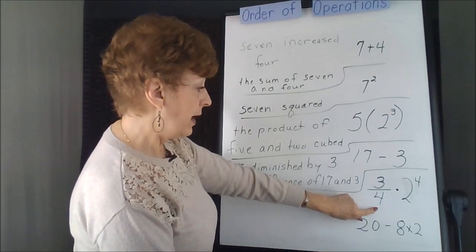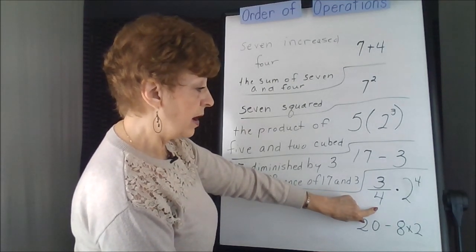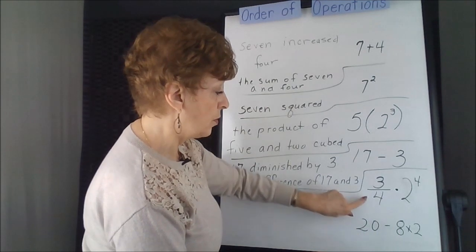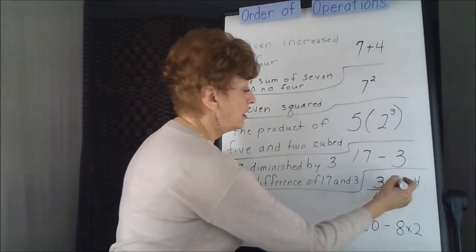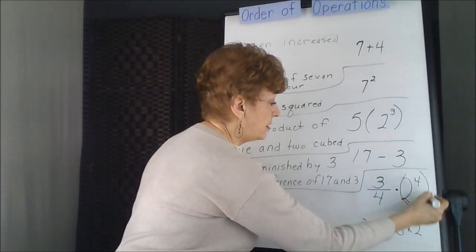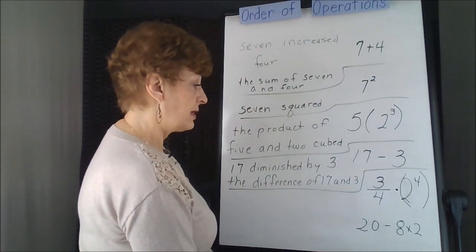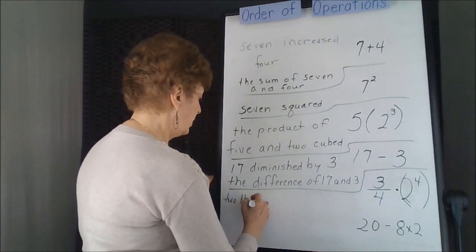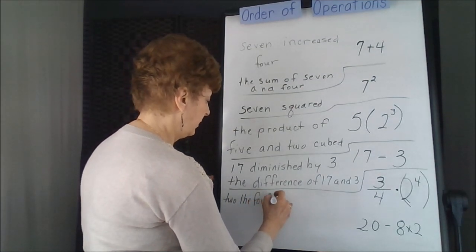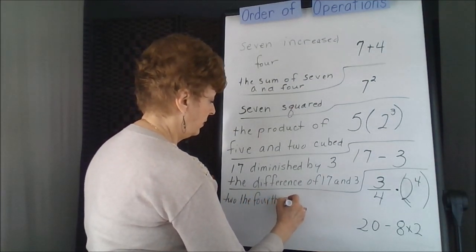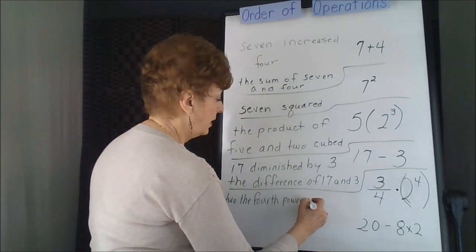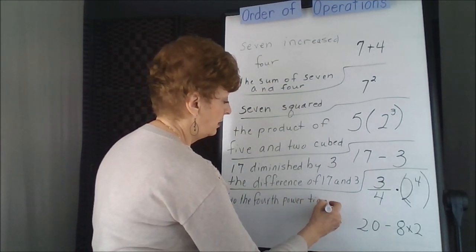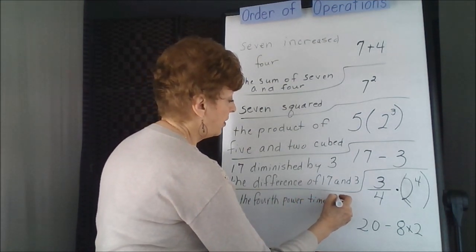Here we have an order of operations where exponents would come before the fraction. So this part right here would be done first. You could say 2 to the fourth power times 3 fourths.